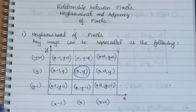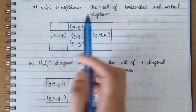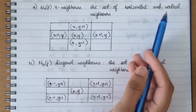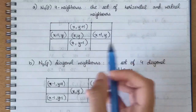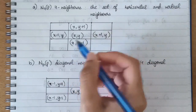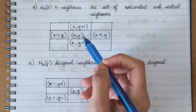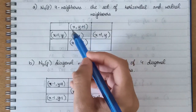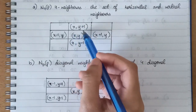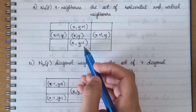We have different types of neighborhoods. The first type is four neighbors — that is, the set of horizontal and vertical neighbors. If we consider point (x, y), then the horizontal and vertical neighbors are: (x, y+1), (x+1, y), (x, y-1), and (x-1, y).